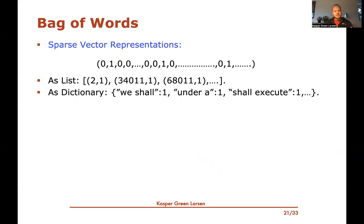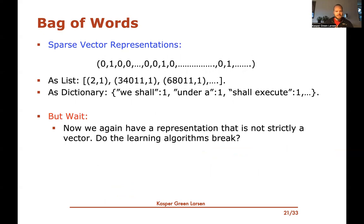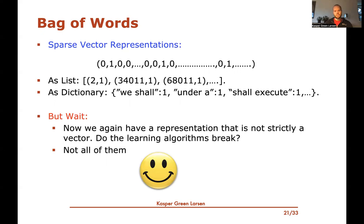These are all different representations of one of these text documents. But the issue is that these representations do not actually match what our learning algorithms expect — all the algorithms we've seen expect real feature vectors. We talked about data matrices X, where we have feature vectors as rows. So maybe the algorithms break now that we have these representations — can we even use our algorithms? Fortunately, some of the algorithms still work, but not all of them. Let's try to see which ones work with these sparse representations.